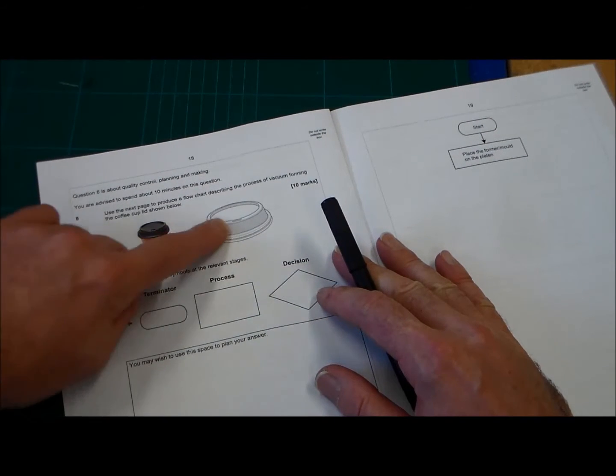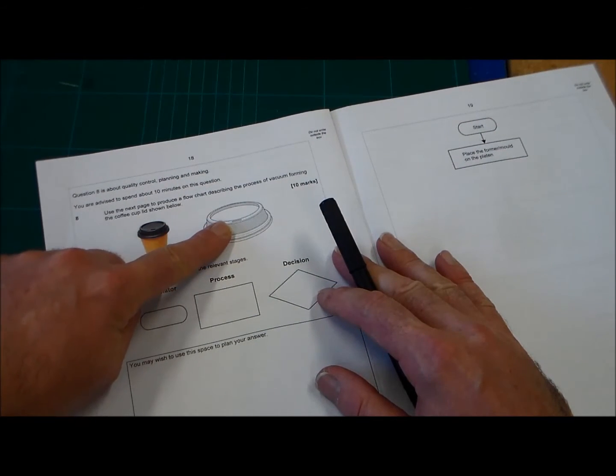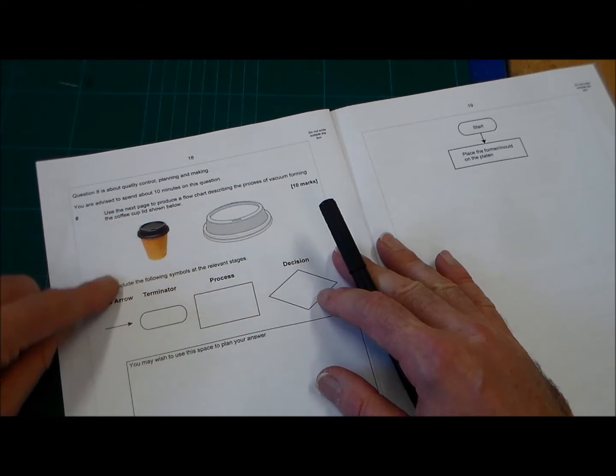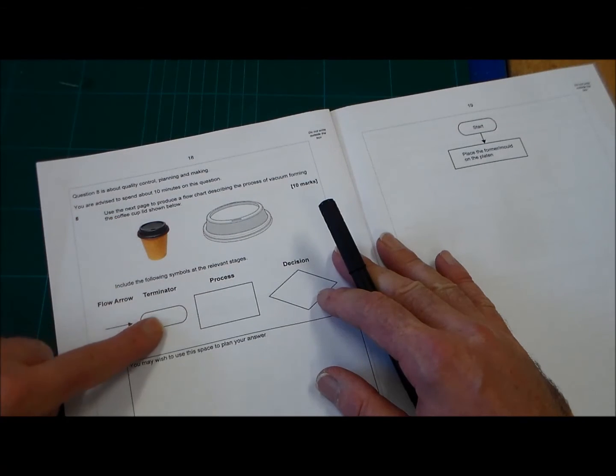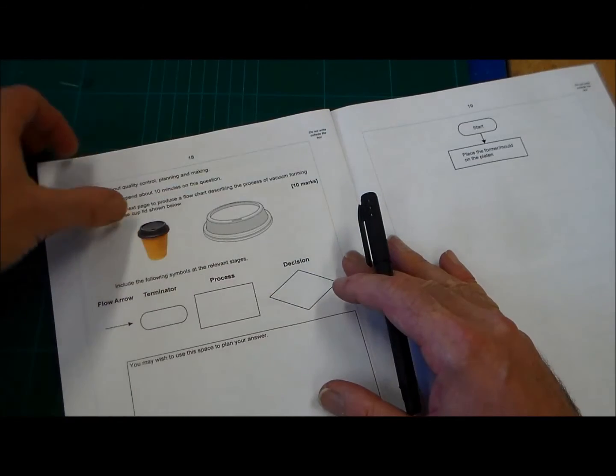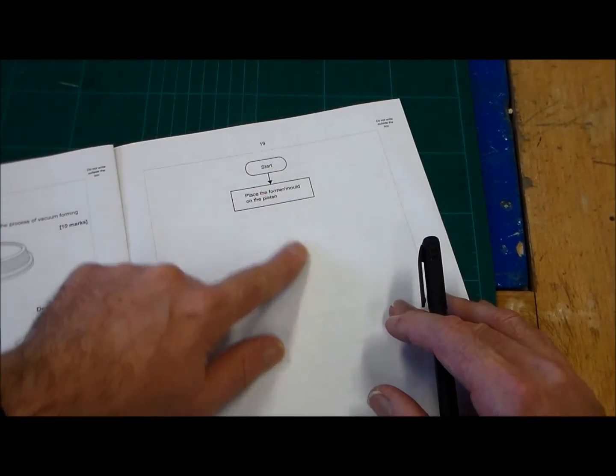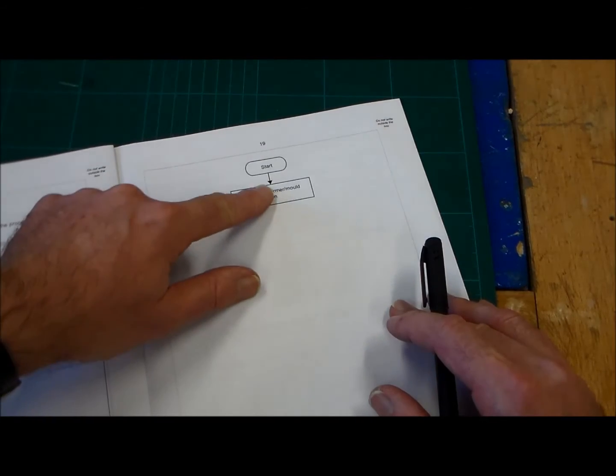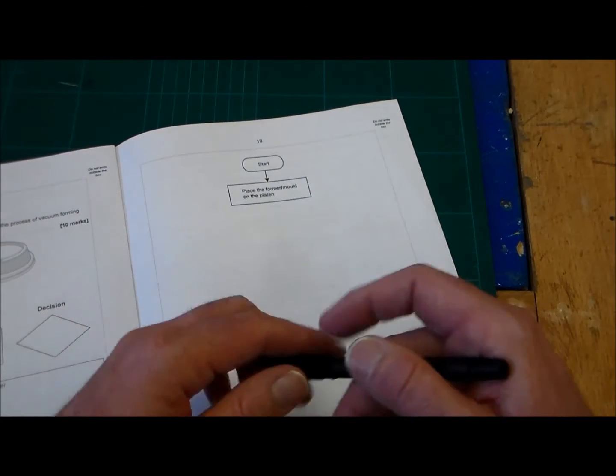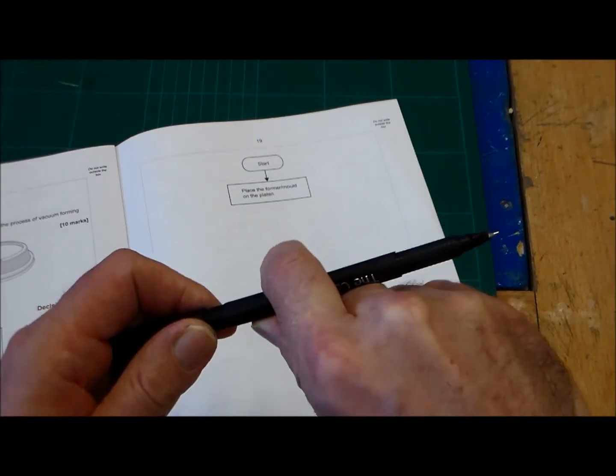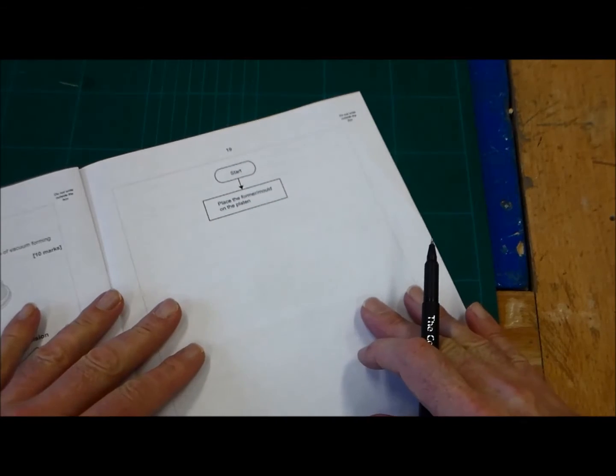It gives us a picture of a coffee cup with a vacuum formed top or coffee cup lid. And it says, include the following symbols. So we've got terminator, process, and decision. And use these symbols. And what it wants you to do is complete this flow diagram. Now, this is quite a common question, or a flow diagram is often in there, so it's quite a favourite for the exam.